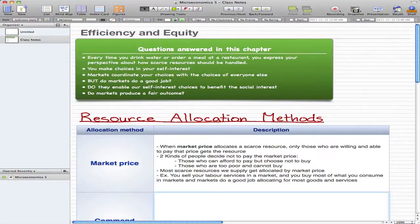This chapter focuses on efficiency and equity and the questions we're going to try to answer. Imagine that every time you drink water or order a meal at a restaurant, you express your perspective about how scarce resources should be handled. You will make choices in your self-interest, but markets will always coordinate your choices with the choices of everyone else.